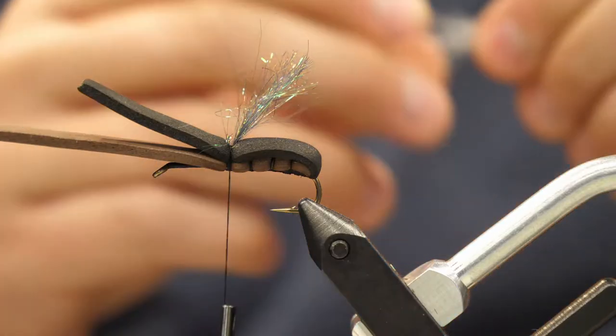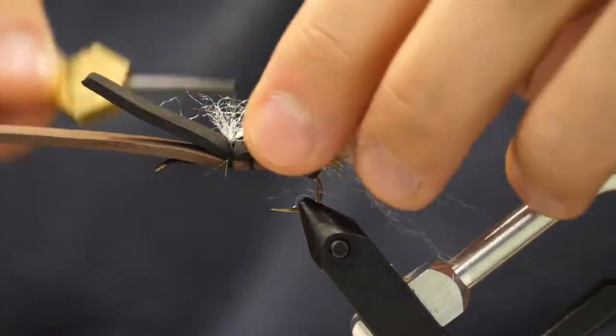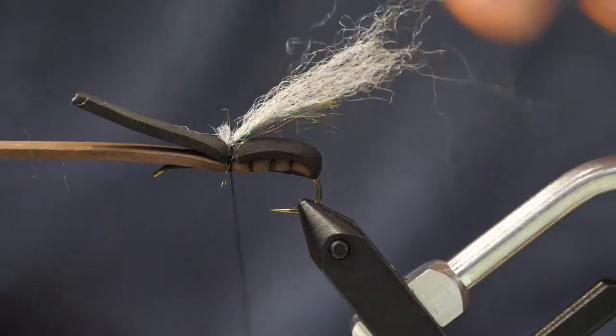Cut it just a bit longer than the butt section. Now we're going to put on some predator fiber in this case. You could use poly yarn, anything you want, and just trim it, same length as the flash.